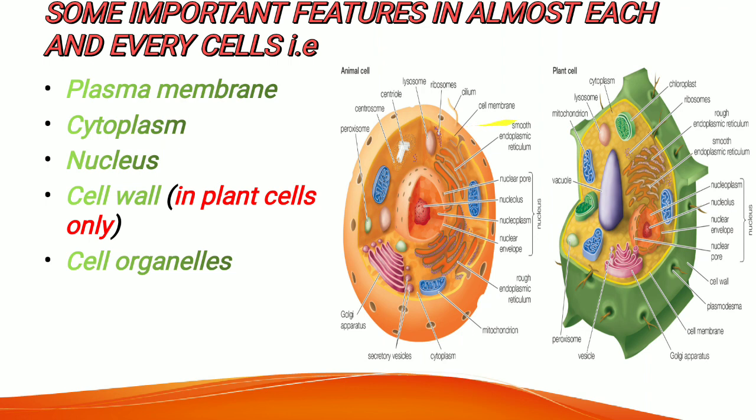The second component is the cytoplasm. Cytoplasm is a jelly-like fluid that fills the inside of the cell. It is made up mostly of water and salt. It is present within the plasma membrane and contains all the cell organelles inside it.